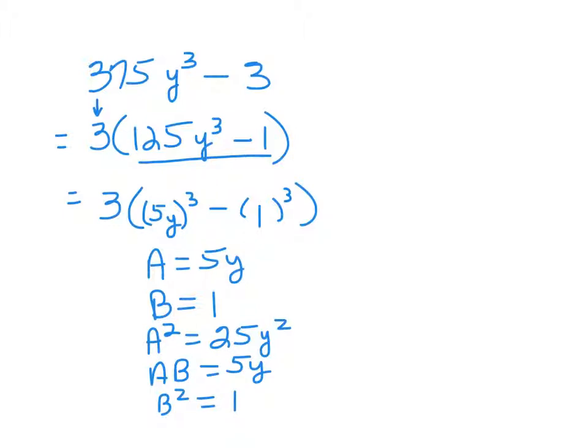Now, as long as we remember to keep the sign in the first parentheses the same, we're going to have minus in there and change it in the middle on the second one so we're going to have a plus in there. We should be in business. So, here we go. Here's our answer. We can't throw the 3 away. It's part of our answer. A minus B is going to be 5y minus 1. A squared is 25y squared plus AB is plus 5y plus B squared is plus 1.